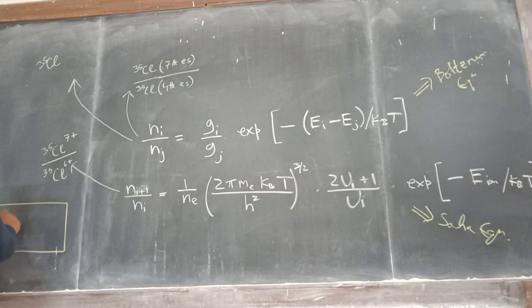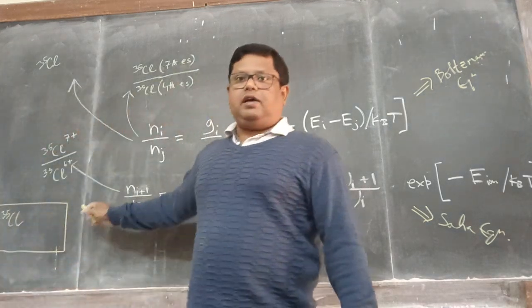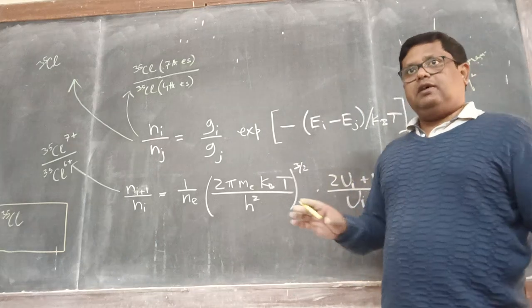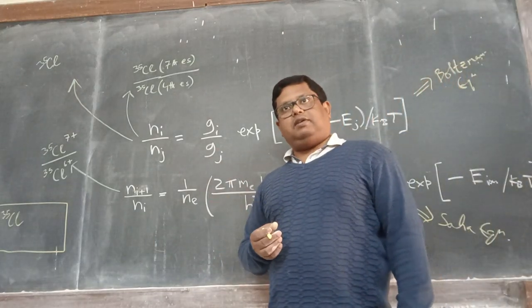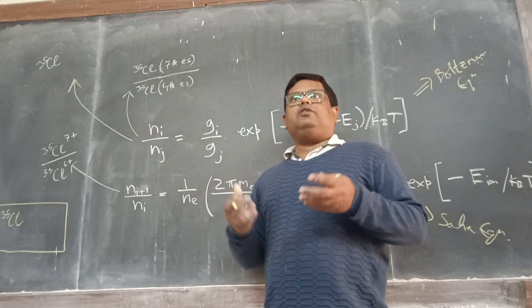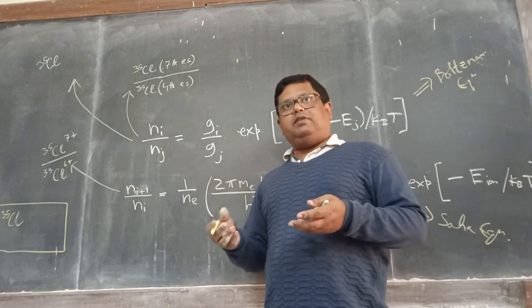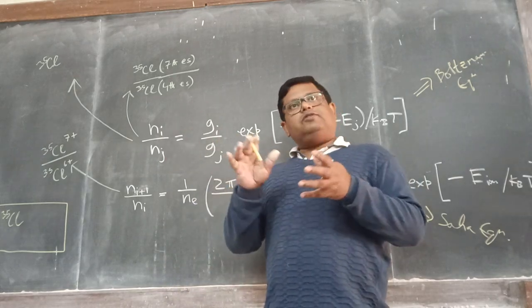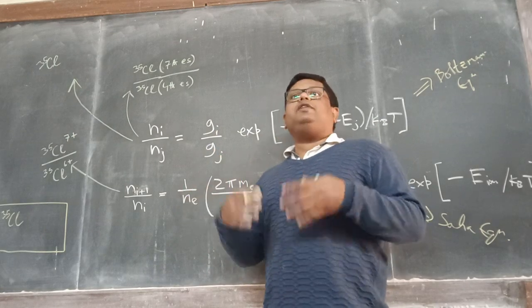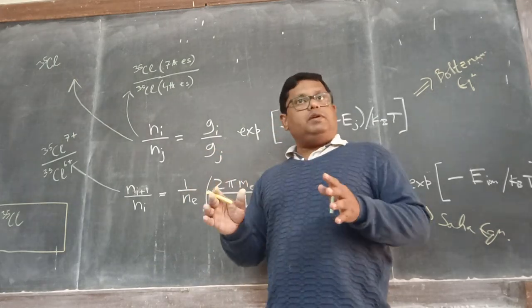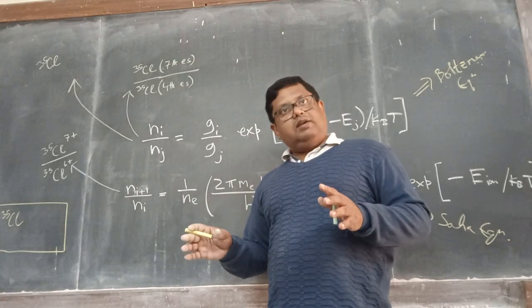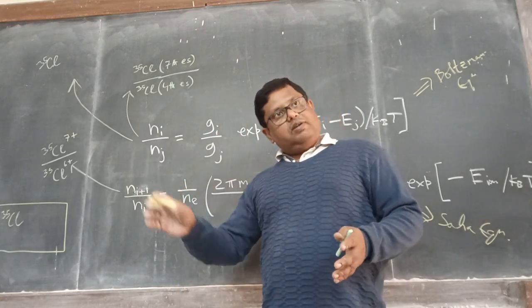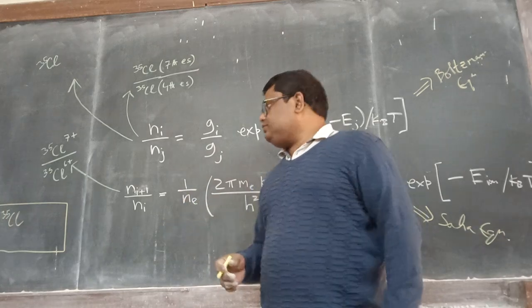For example, suppose I have a box of chlorine-35 atoms — initially just chlorine gas. Now I slowly increase the temperature. Because of thermal energy being given, the electrons may get to the excited state, and eventually there may be ionization. But remember, this is a statistical process, so not all of them will be excited to the same level or ionized at the same time.